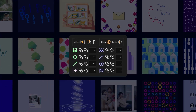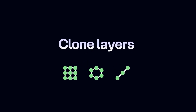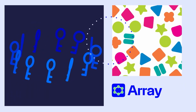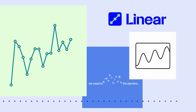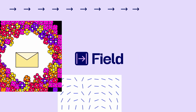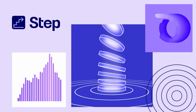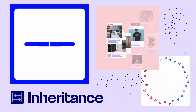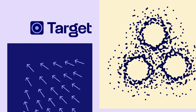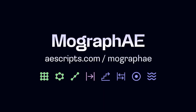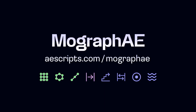MoGraph AE is a powerful toolkit facilitating swift creation of intricate animations through three cloners and five effectors. The Grid Cloner organizes layers into a grid, the Array Cloner arranges them in a radial array, and the Linear Cloner aligns layers linearly. Effectors like Field impact layer properties based on proximity; Step influences layer properties based on layer index, allowing sequential animation; Inheritance morphs layer position and rotation between cloners for smooth transitions; Target repels layers and points them towards it, very useful in map animation scenarios; and Noise effects layer properties based on a random noise pattern. I urge you to check it out and follow the creator on Twitter.